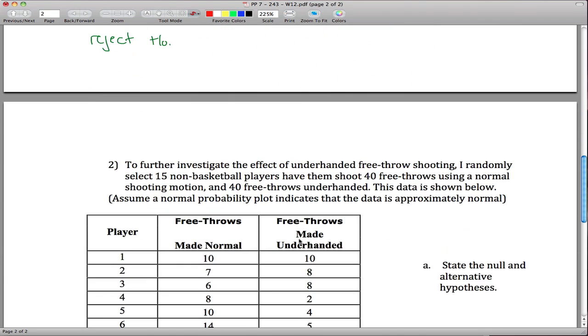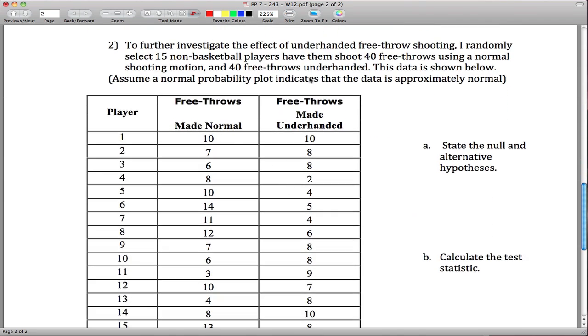And that's the end of the first problem, I'll move on, I think there's a second one here. Alright, second one, I'm going to further investigate the effect of underhand free throw shooting. So what I have here is a two sample, a dependent two sample test, so the idea is here's how many free throws you make normally, here's how many you make if you're underhanded. I think each person shot 40 free throws, wow so they did pretty poorly here. But I guess that could happen.